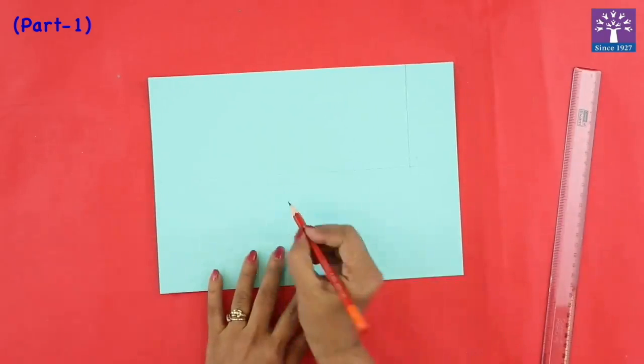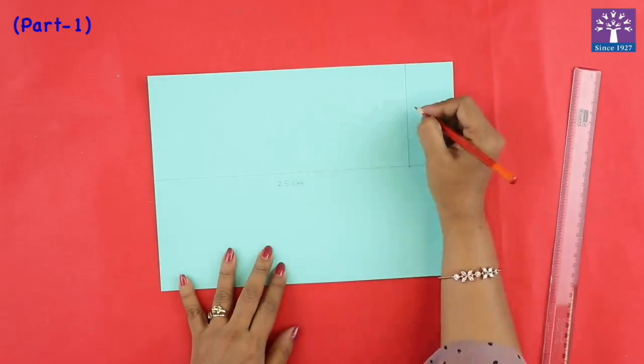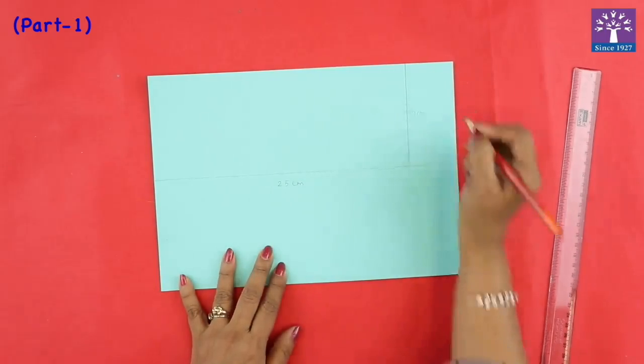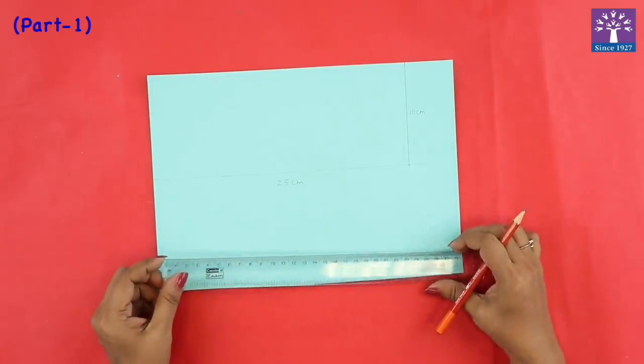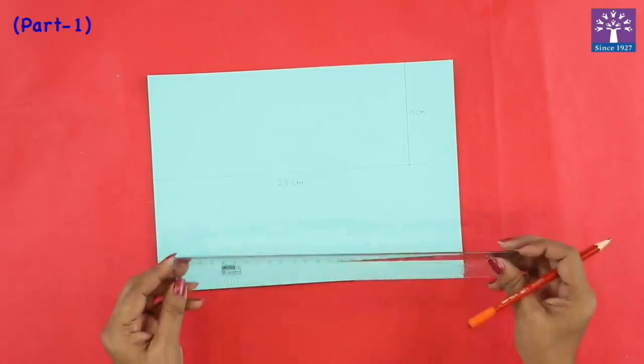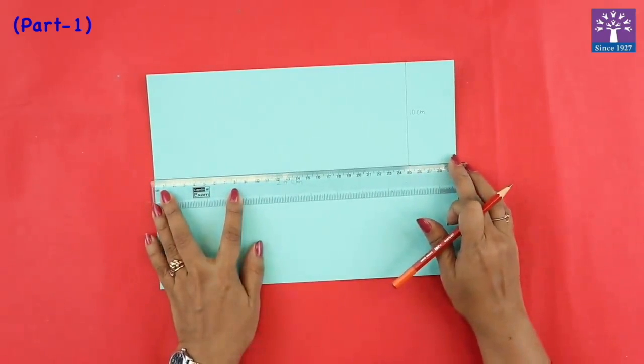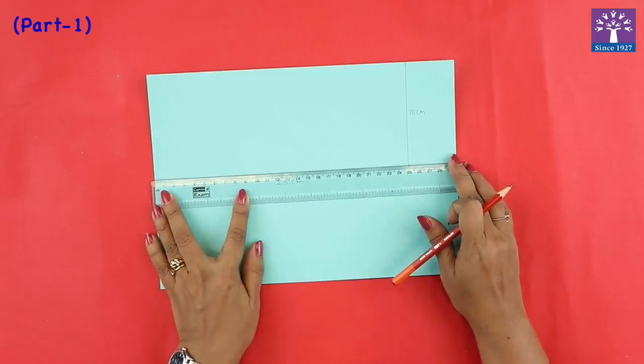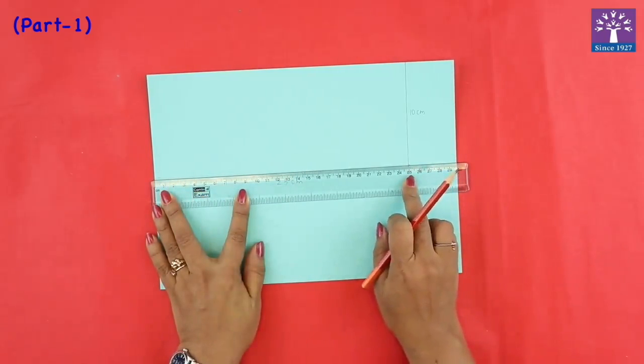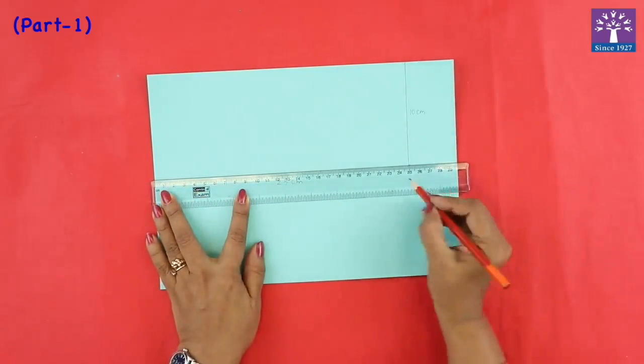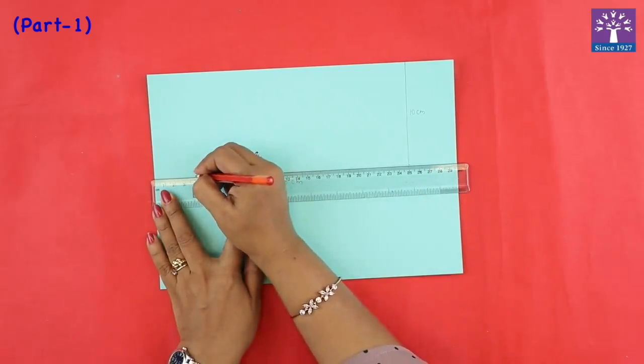So this is 25 centimeter and this is 10 centimeter. Now we will mark all the four sides with 4 centimeter. First we'll start with the length. You'll always start marking from one side. Since this is 25 centimeters you will have one centimeter extra which will be needed later on for folding. So we will mark four centimeters.